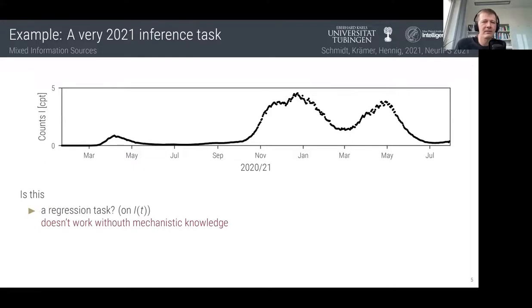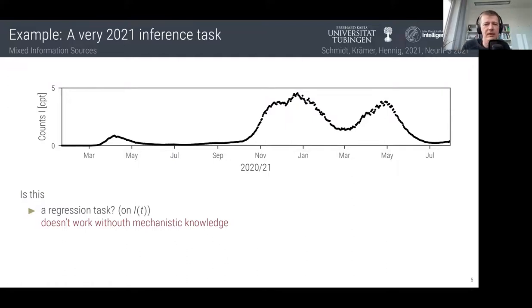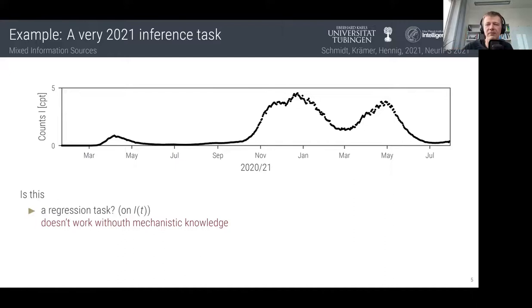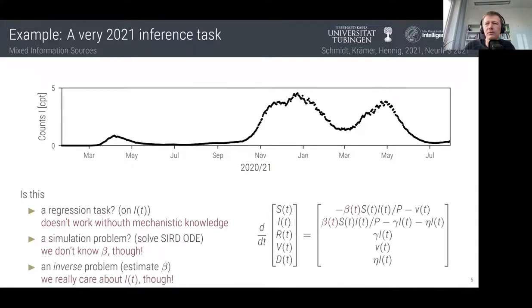If I asked my straw-man undergraduate machine learning student how to address this problem, the first answer might be: use standard ML tools to extrapolate to the right — a Gaussian process regression model or a simple feedforward neural network. But we all agree that won't work well; these methods will extrapolate in a straight line, return to zero, or predict in some simple fashion that doesn't reflect what we expect to happen. Why? Because we have additional mechanistic knowledge — we know this line is governed by physical causal processes.